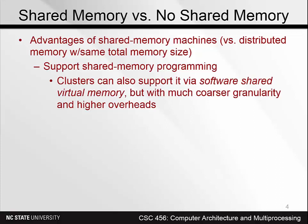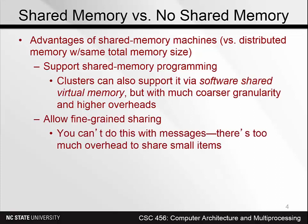You can't have processors sharing the same page if you need to move the page back and forth over the network every time another processor needs to access it. Shared memory allows fine-grained sharing, meaning you can communicate every few instructions — something you can't do with messages due to the overhead of packaging, transporting, and retrieving them. Shared memory multiprocessors also have a single operating system image, so the OS can control all nodes, whereas without shared memory a large part of the OS must be replicated on each node.